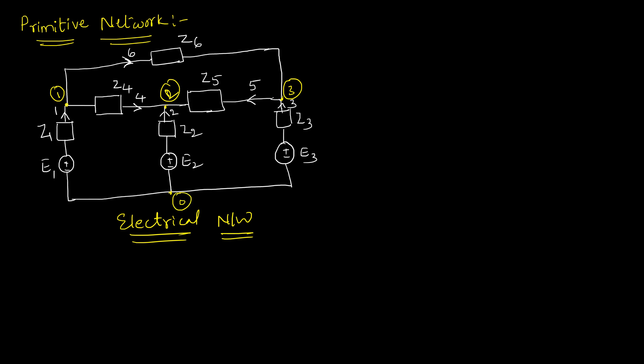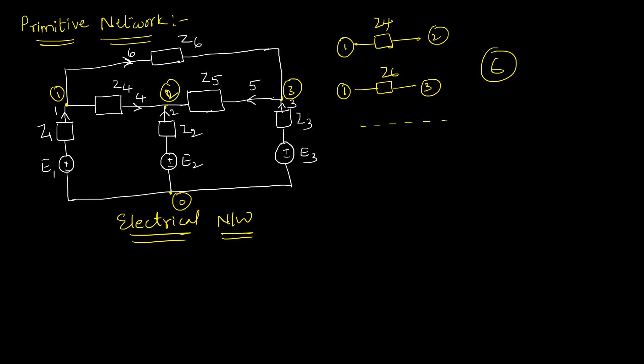In total we are having four nodes. We can have the impedance Z4, which was connected between node one and node two. This is one unconnected branch. Similarly, we can have the impedance Z6 between node one and node three. Like that, you can form all six branches into an unconnected set.